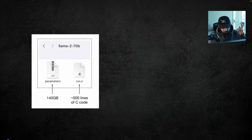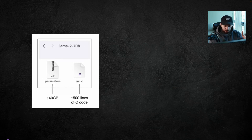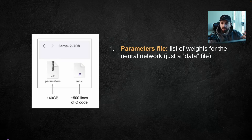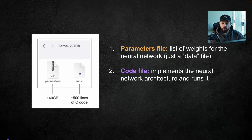Since you're developers, let's use developer language. An LLM is basically just two files — literally two files. If you want to run an LLM locally on your computer, you just need those two files. The first is a parameters file, which contains billions of parameters — for example, the LLaMA 270B model or GPT-4 both have billions of parameters, which are essentially a list of weights for the neural network. Then you have a code file that's just a few hundred lines long, implementing the architecture of the neural network and running it.